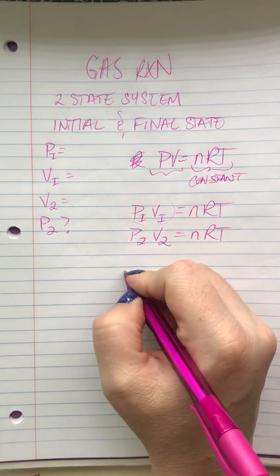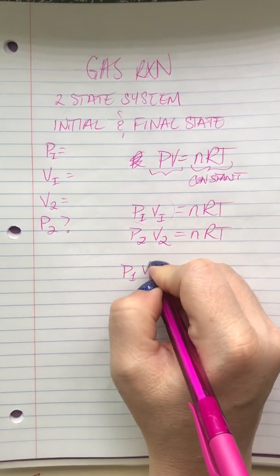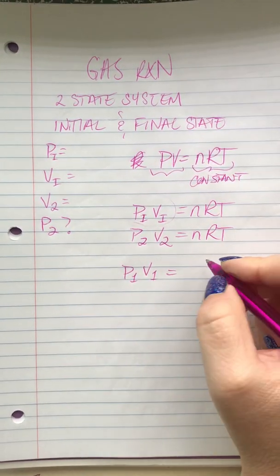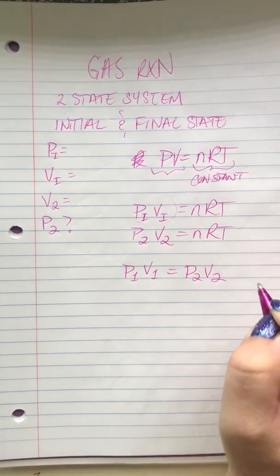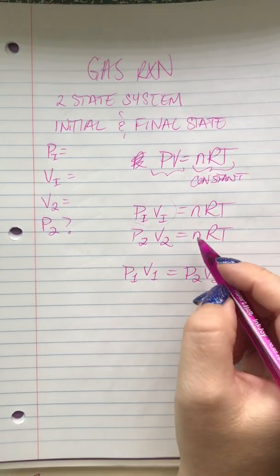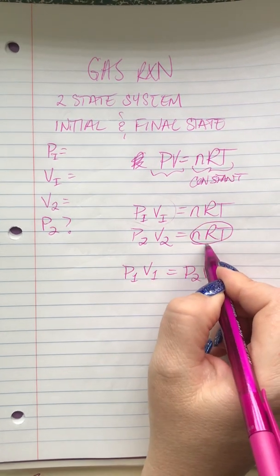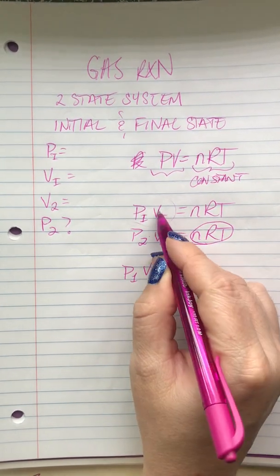So what you end up getting is P1V1—I'm sorry I changed variables there—equals P2V2. Because if they both equal this, then they must be equal to each other.